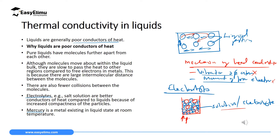What you should note about mercury is that mercury is a metal — it only exists in liquid state at room temperature. If you cool it below room temperature, it will be in solid state. Since mercury is a metal, it has free electrons, and its particles are vibrating and in touch with each other. So this makes mercury conduct heat just like good conductors of heat.